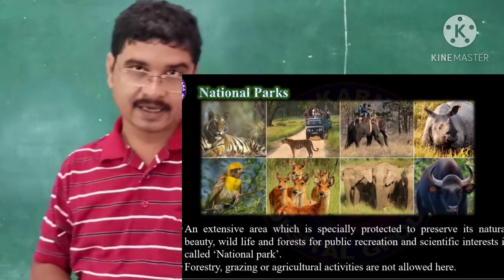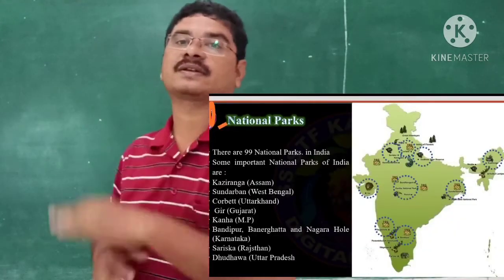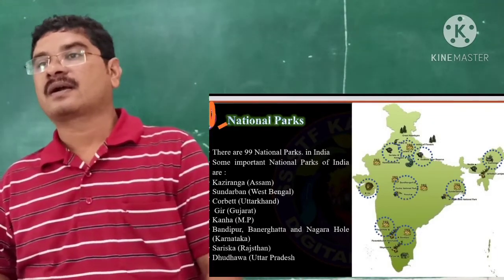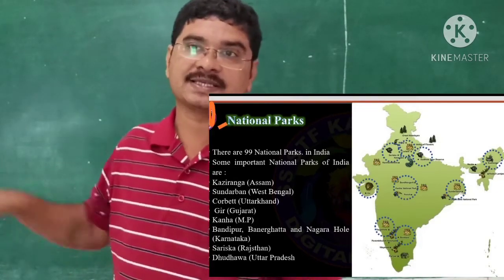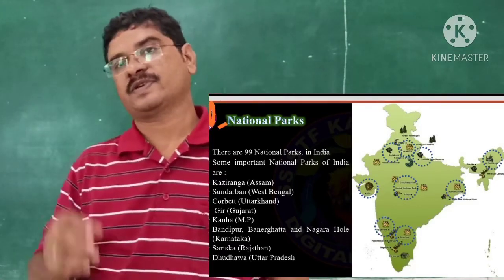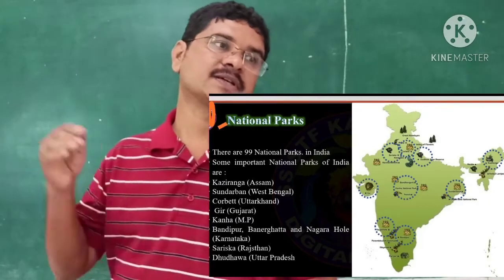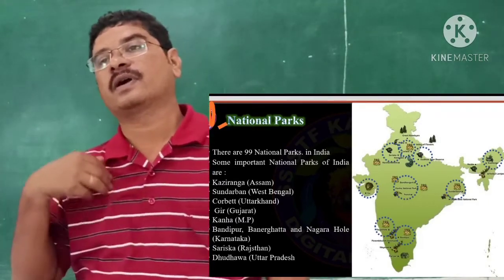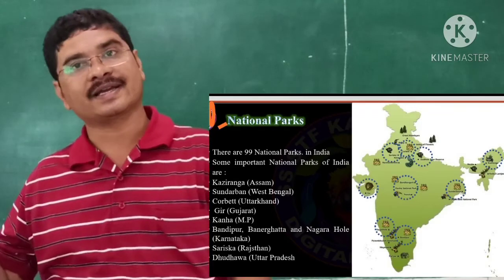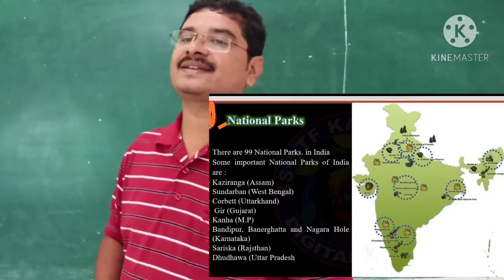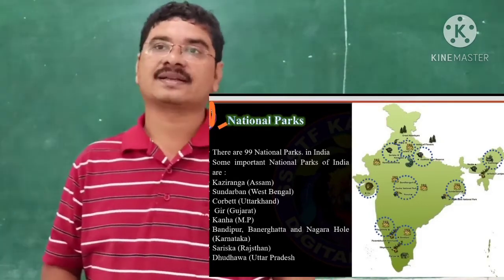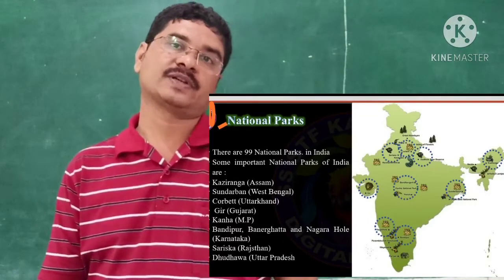There are 99 national parks in India. Some important national parks are: Kaziranga in Assam, Sundarbans in West Bengal, Corbett in Uttarakhand, Gir in Gujarat, Kanha in Madhya Pradesh, Bandipur, Bannerghatta, and Nagarhole in Karnataka, and Sariska in Rajasthan.